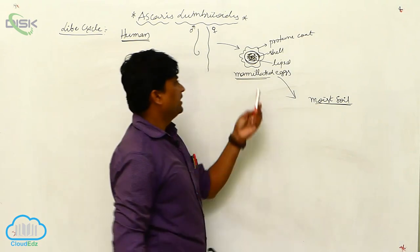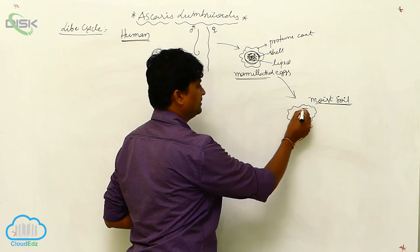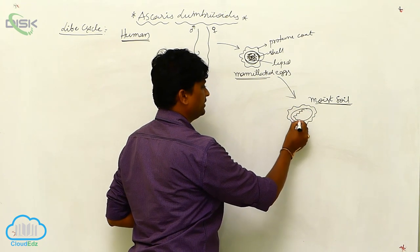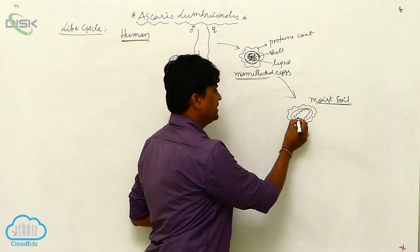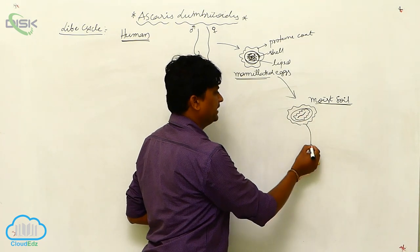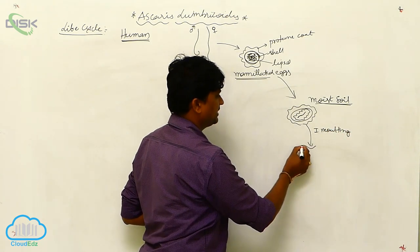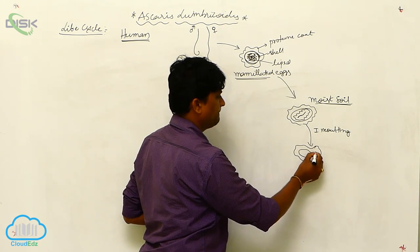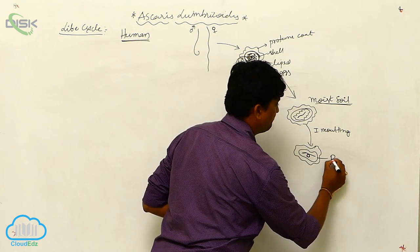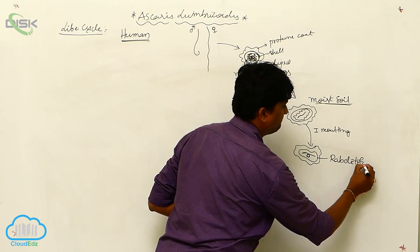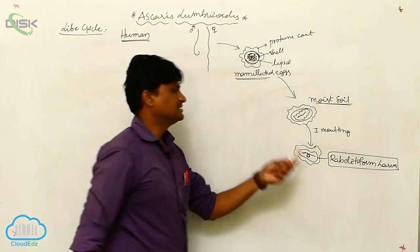When the eggs reach moist soil, that is the favorable condition for developing. The egg undergoes hatching, and within the shell and lipid coating, the first stage larva is formed in the soil. The first molting takes place, leading to the formation of the second stage larva.